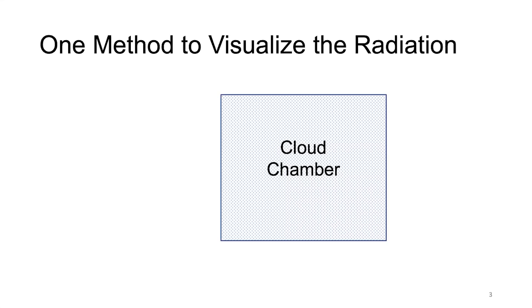As the radiation travels through the cloud chamber, it will spark and cause a path, and you can see that path. For example, the radiation comes in, hits one of the molecules, creates a spark, and we can see the path. So this is a very useful method to visualize the radiation.